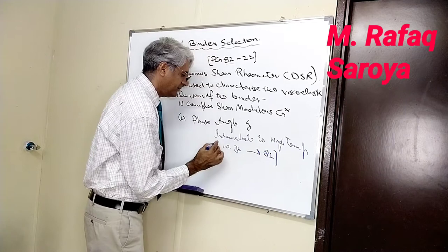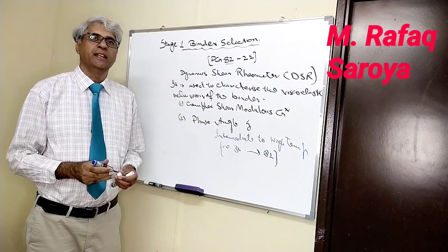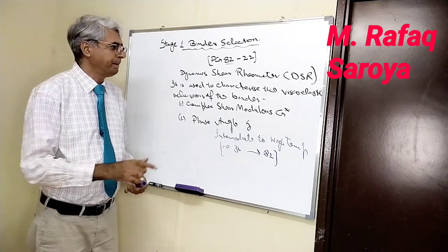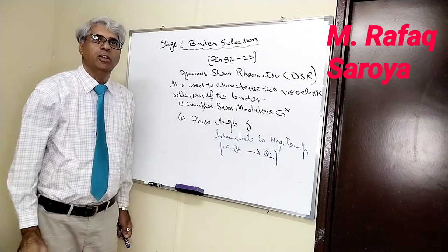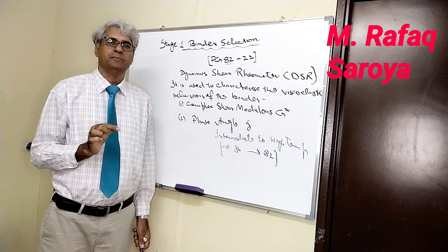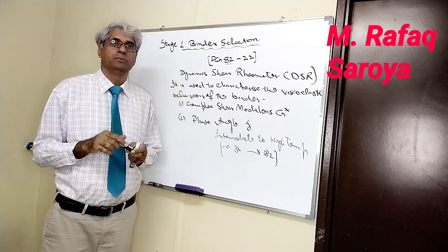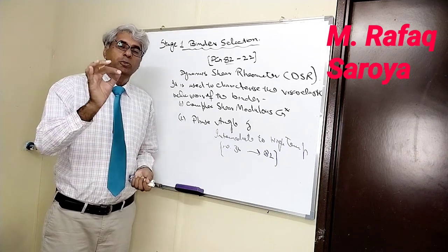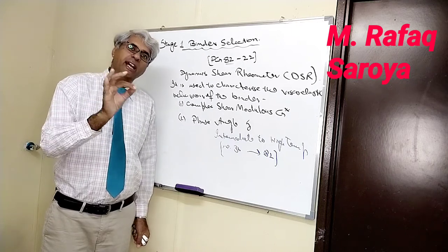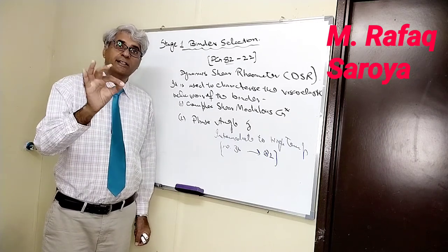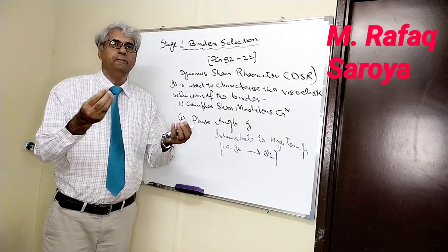This can be the intermediate and this will be the high temperature. At these two temperatures, the values of this delta and this complex shear modulus are found out. And these values are used to analyze or characterize, or the results are used to predict the temperature rutting resistance and fatigue cracking.